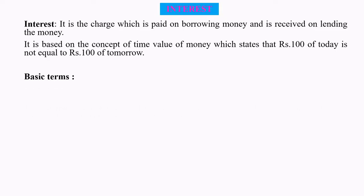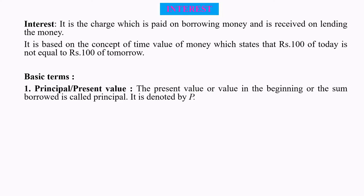Basic Terms. Number 1: Principal, also written as Present Value. The present value, or value in the beginning, or the sum borrowed is called Principal. For example, the deposited amount or loan amount is known as Principal Value. It is denoted by P.